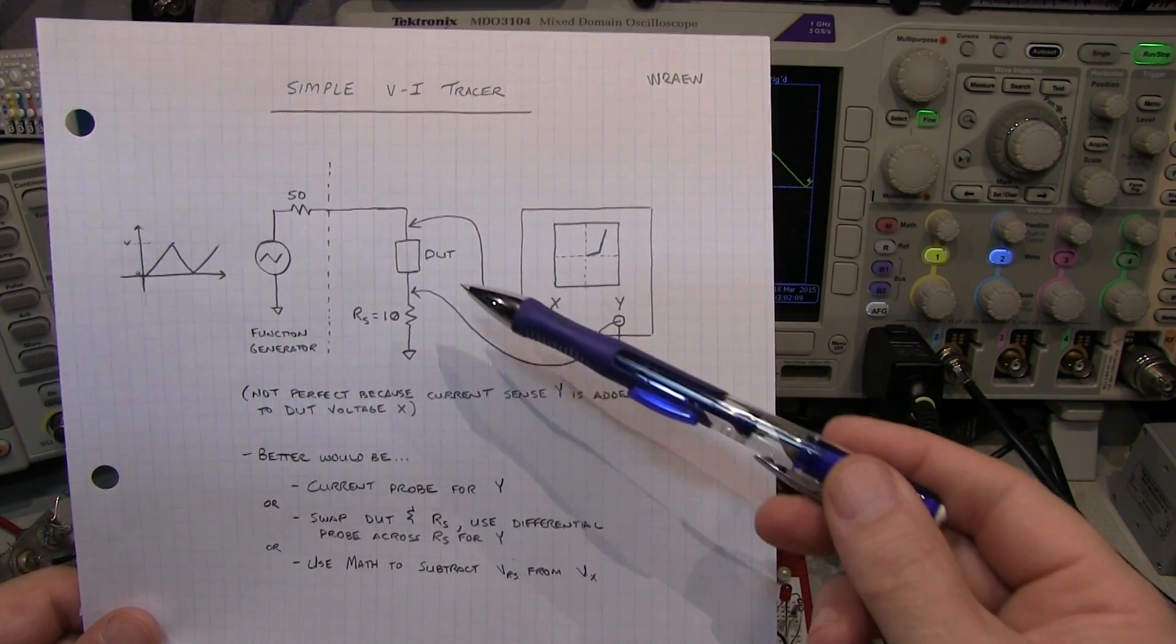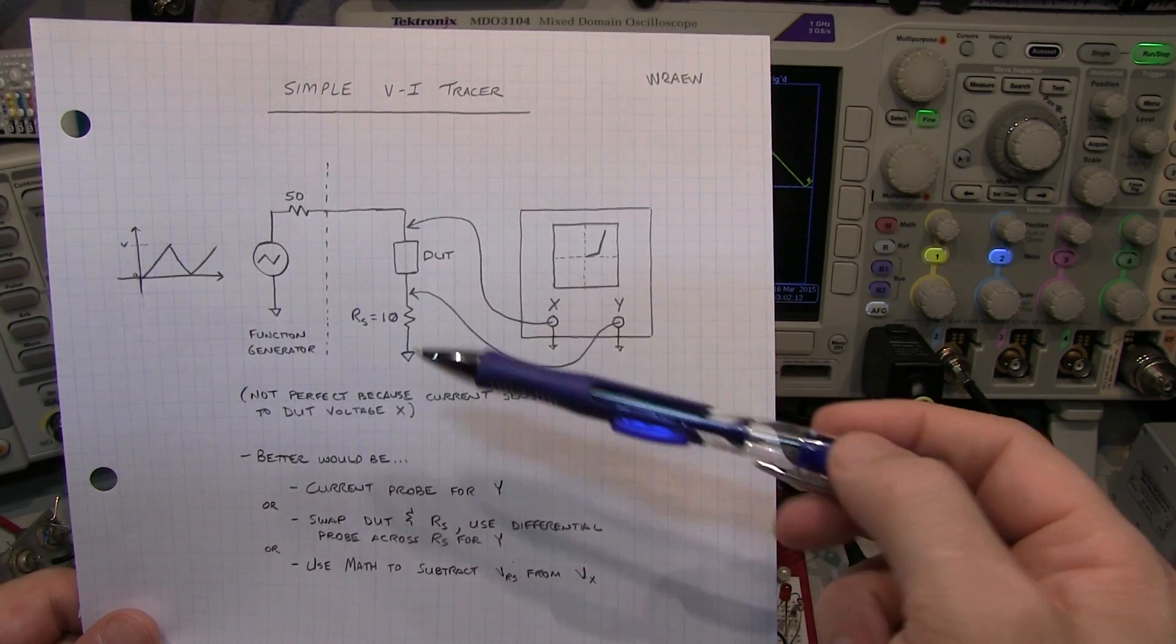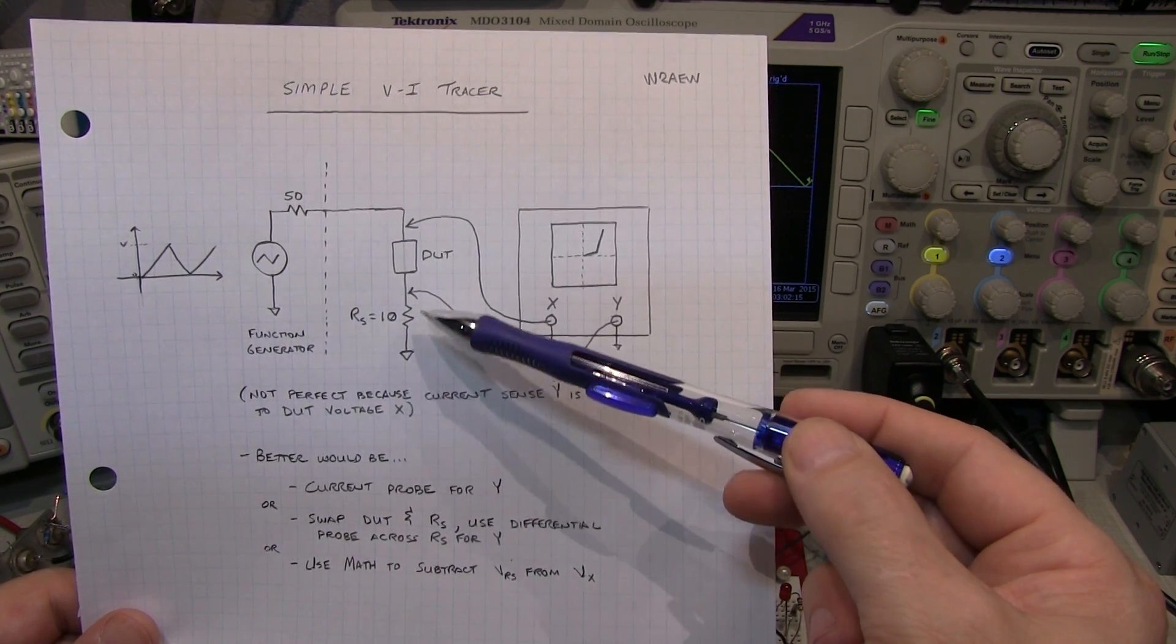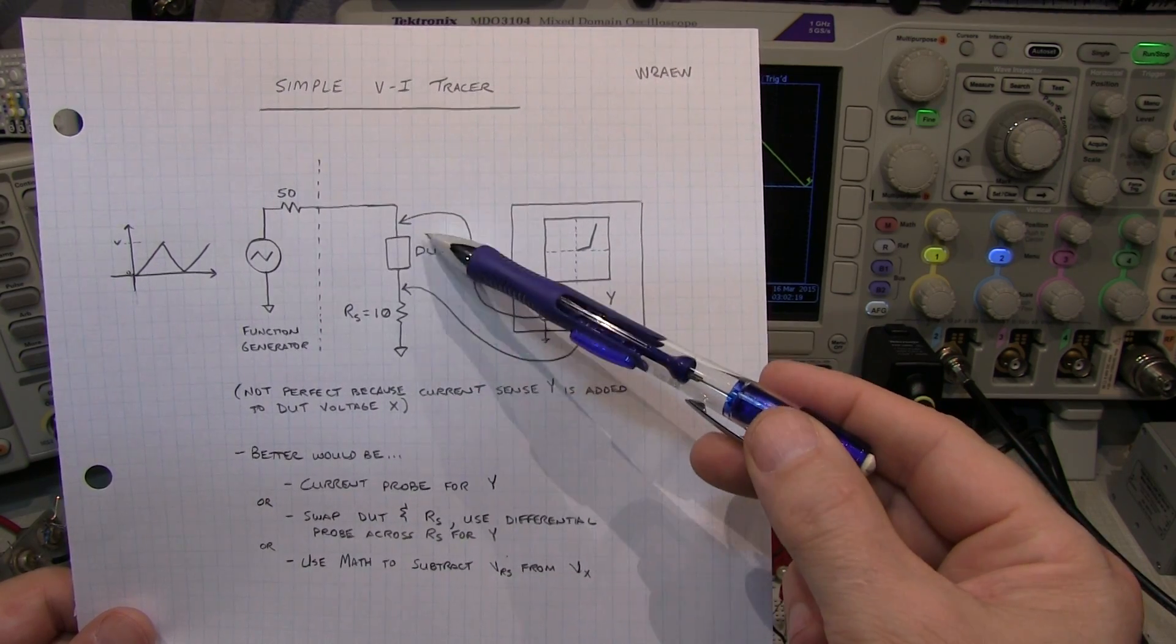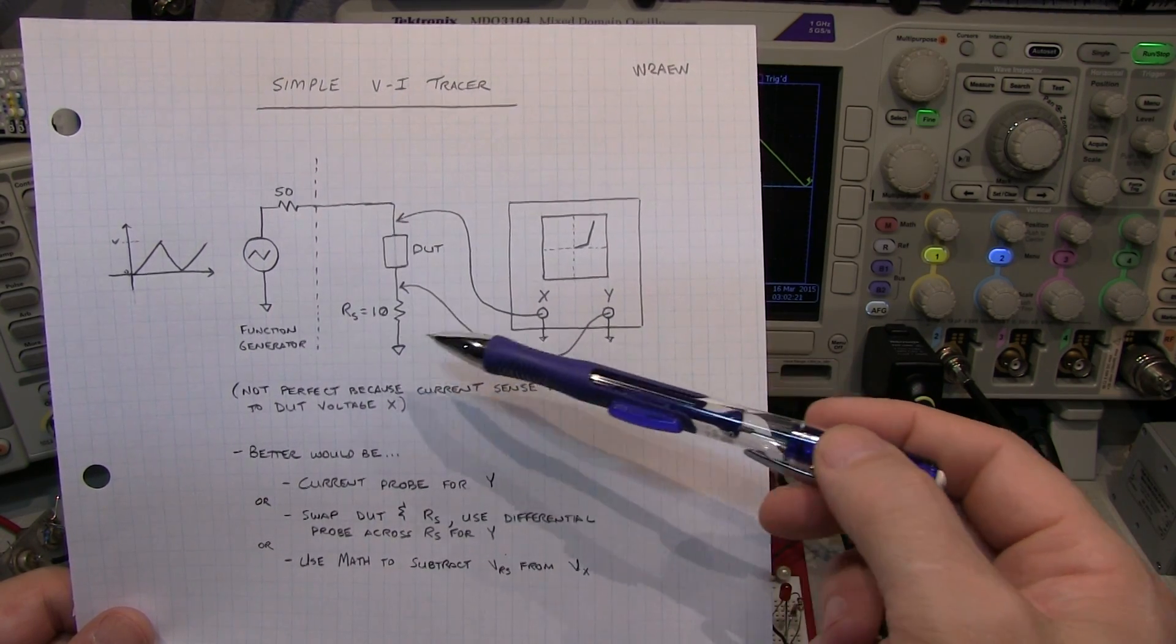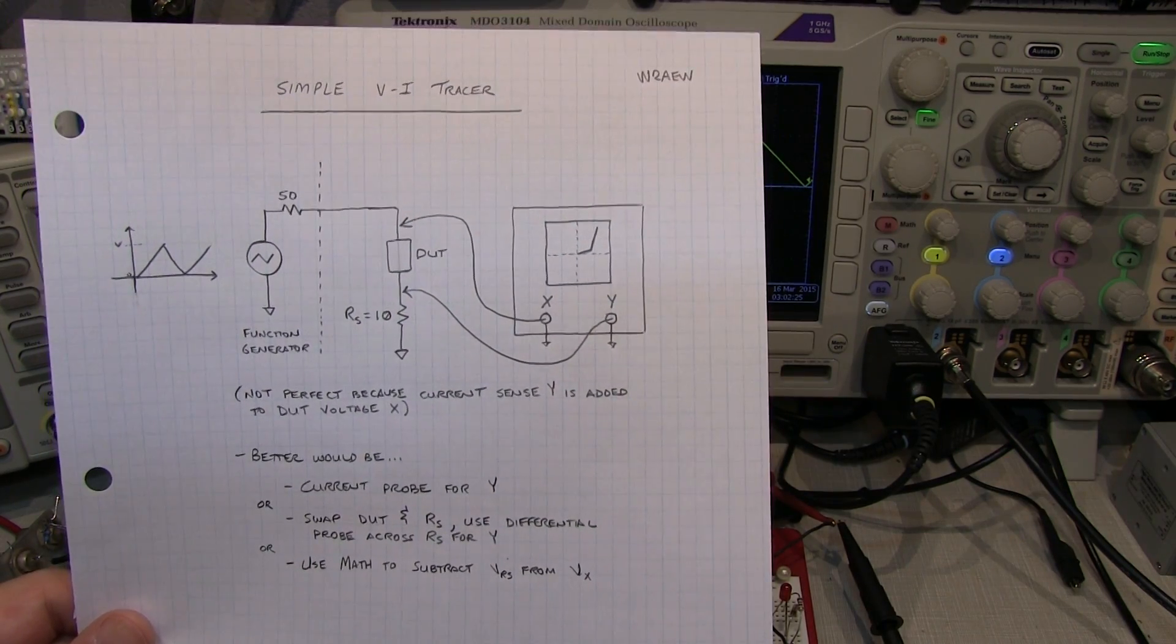In my case I'm going to be sweeping just a few milliamps of current through the device under test, which means I'm talking about a few tens of millivolts generated here, and that compared to my DUT voltage is pretty small, so that's why I'm fine with using this approach. Let's go take a look at how well this works.